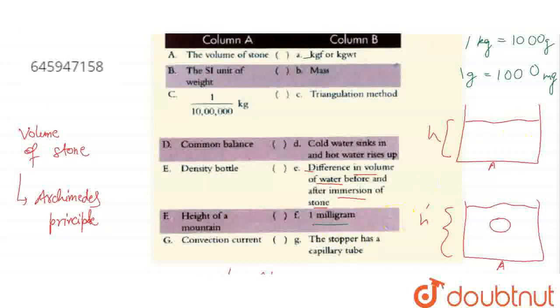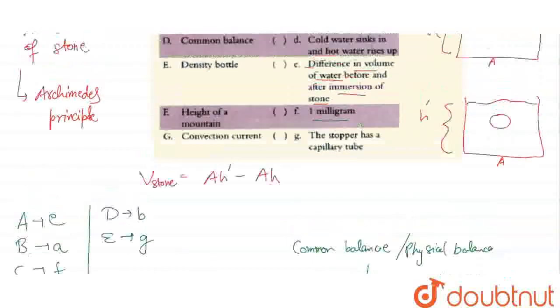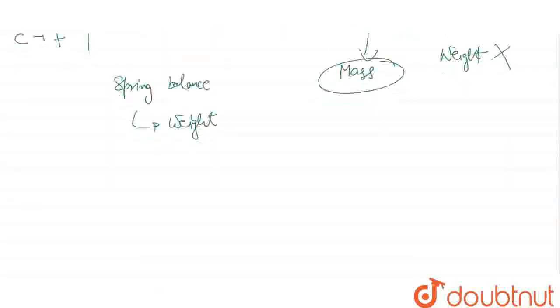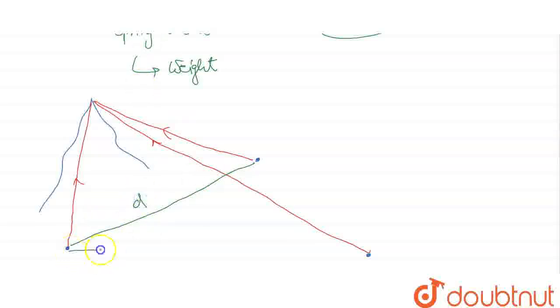Triangulation method - in this what we do is take three points on any surface. Let's say this is my mountain, right. I'll observe this mountain's peak from three different points - first from here, then from here, then from here. The distance between these points I know - this distance d I know, this p I know, this q I know.